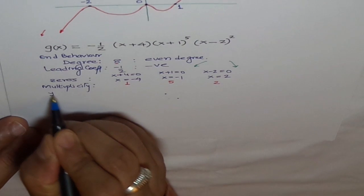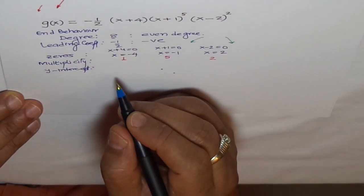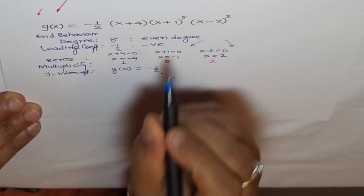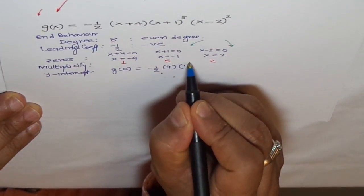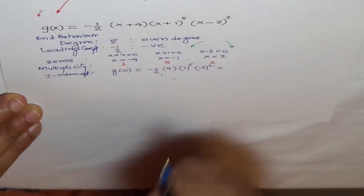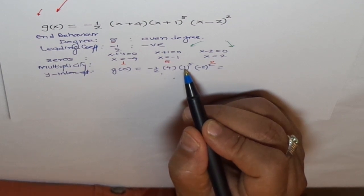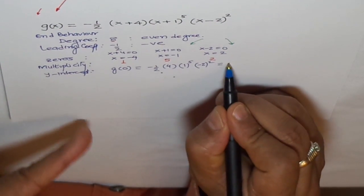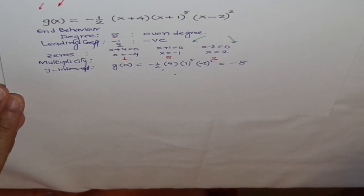How about y-intercept? Y-intercept is plug in zero for x. g of zero equals minus half, and when you plug in zero we get 4 here, times 1 to the power of 5, times minus 2 squared. Which is equal to what? Minus 2 squared is plus 4. 1, 4 times 1 is 1, and 4 times 4 is 16. 16 divided by 2 is 8. But with this negative sign, it becomes minus 8. So we have y-intercept of minus 8.